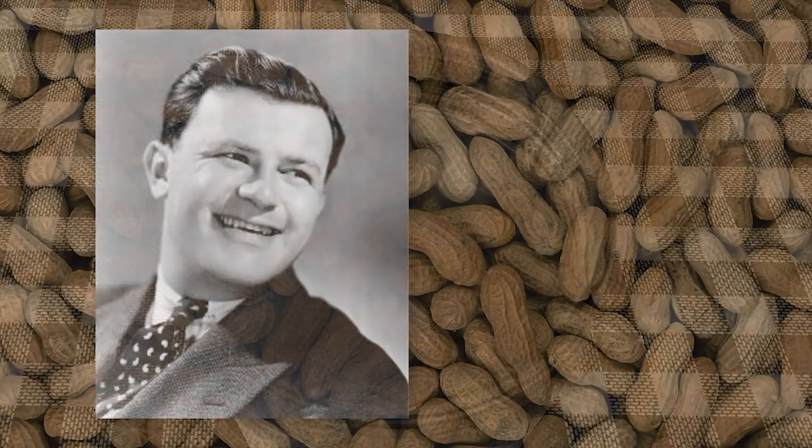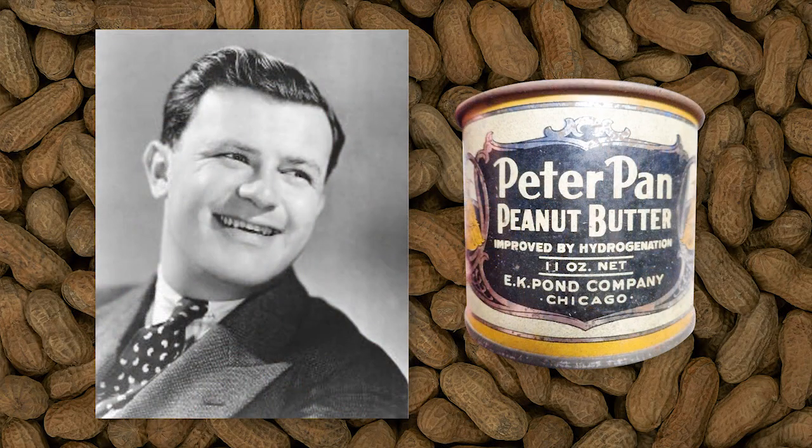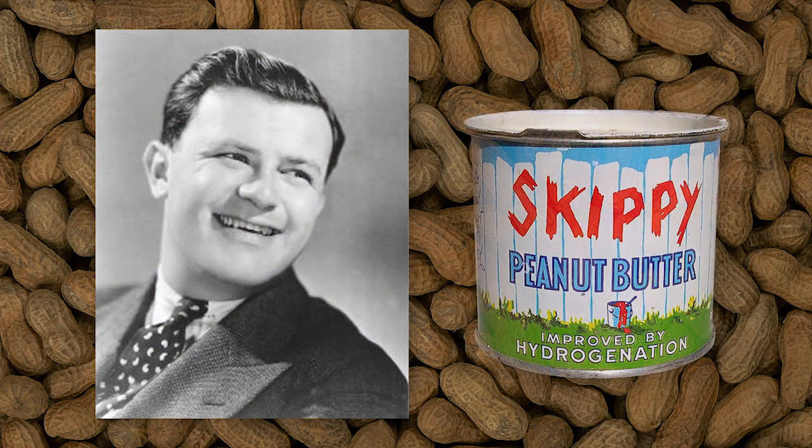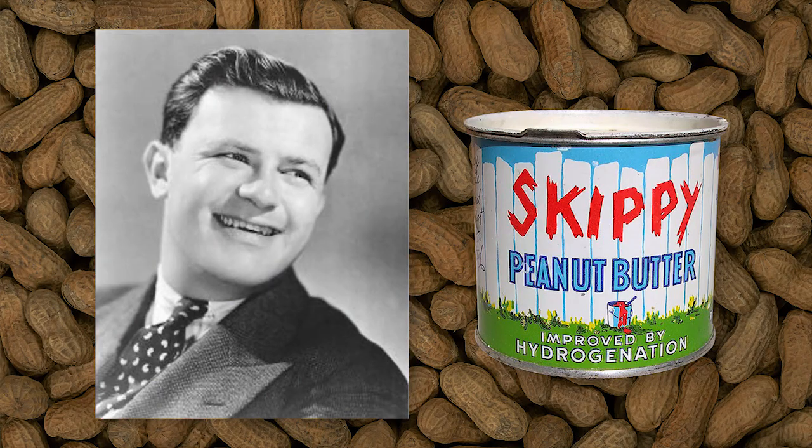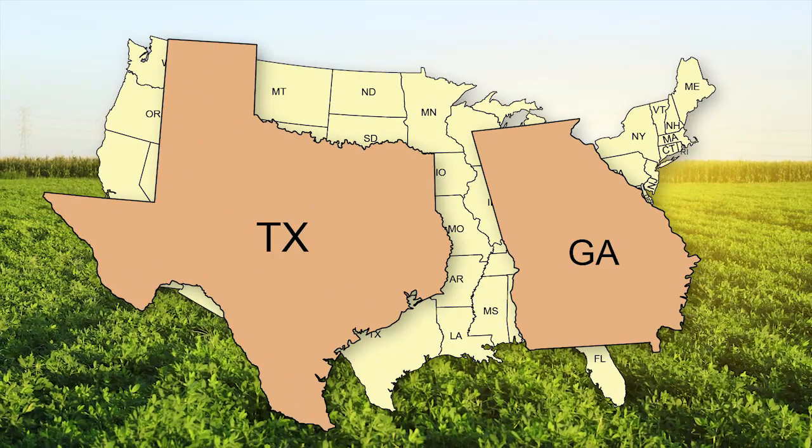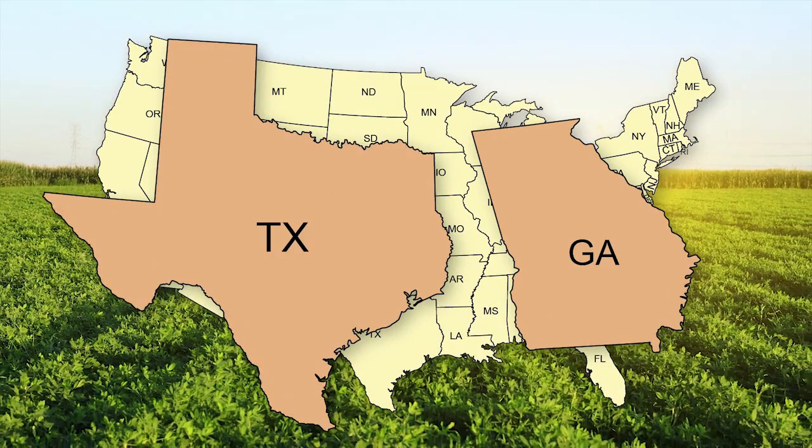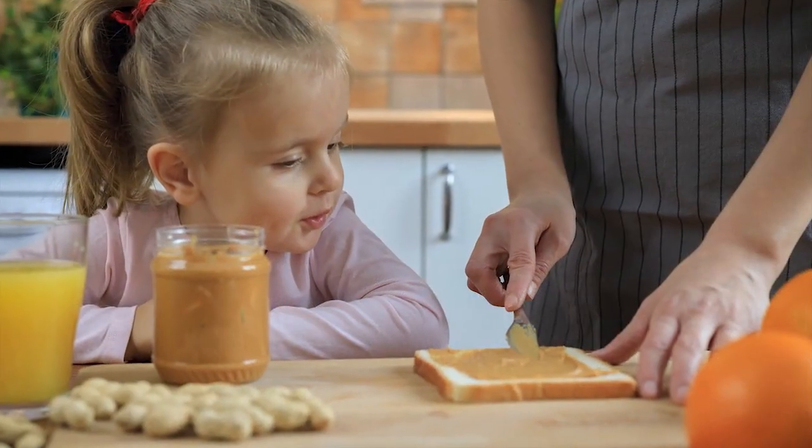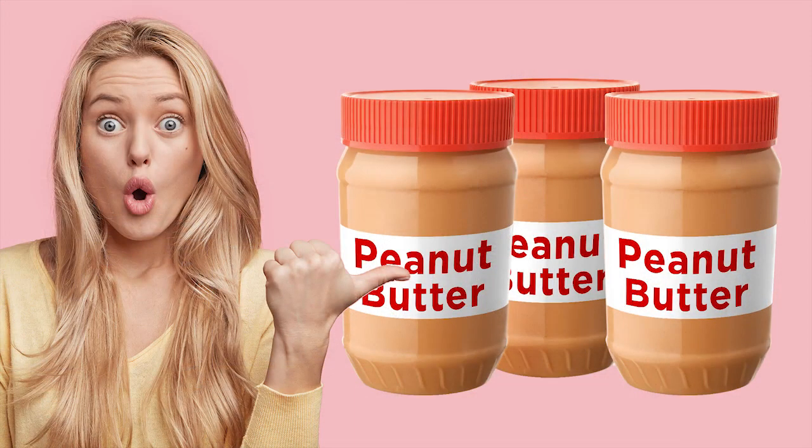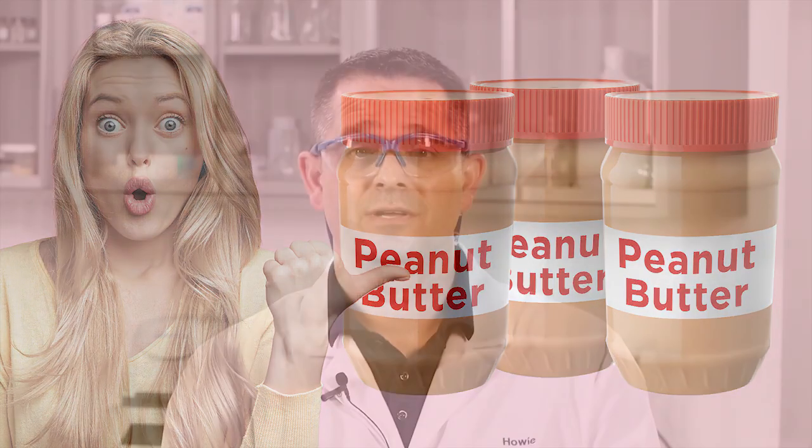Today, Georgia and Texas are the two biggest growers of peanuts in the United States, and Americans consume around 700 million pounds of peanut butter per year. That's about three pounds per person. So how do you like your peanut butter - creamy or crunchy?